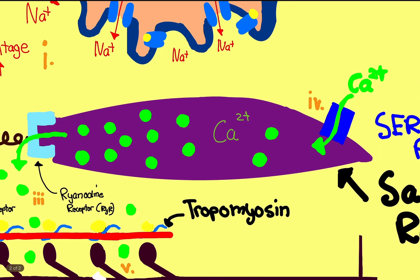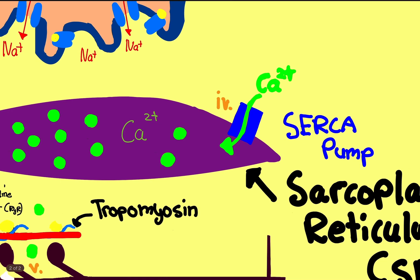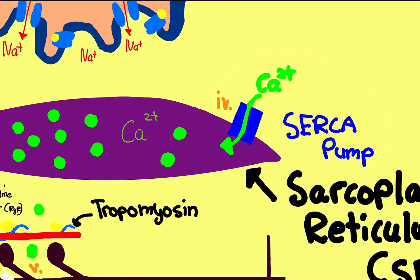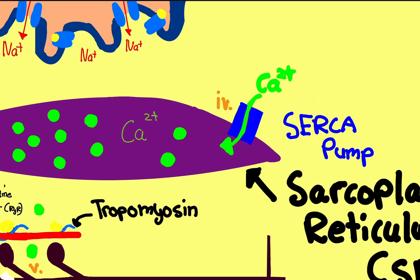You're probably wondering: when the calcium rushes out, how does it get back in? There's something called the sarcopump, right here. All it does is take calcium and shove it back inside the sarcoplasmic reticulum. So it's called the sarcopump.